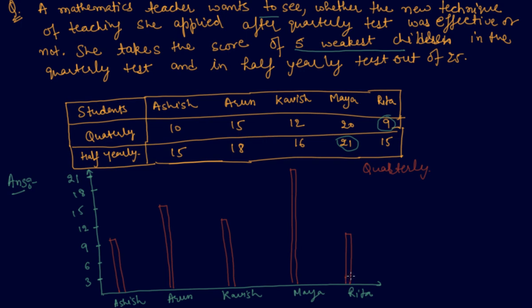And what about half yearly? Let's take a different color for half yearly. Let me take this as a half yearly color. So half yearly will be represented light blue, and the quarterly was shown in red. So half yearly for Ashish will be 15 marks. For Ashish, half yearly numbers are 15. And for Arun, it is 18. So I will draw this bar graph.